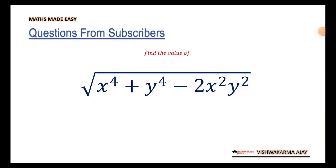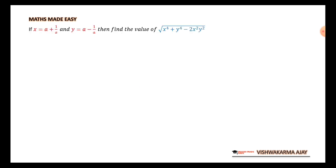Welcome to Maths Made Easy. Today we are going to solve a very interesting question requested by one of our subscribers. If x is equal to a plus 1 by a, and y is equal to a minus 1 by a, then find the value of the expression under root x raised to 4 plus y raised to 4 minus 2x squared y squared. We know the value of x, we know the value of y, and we have to find the value of this expression.